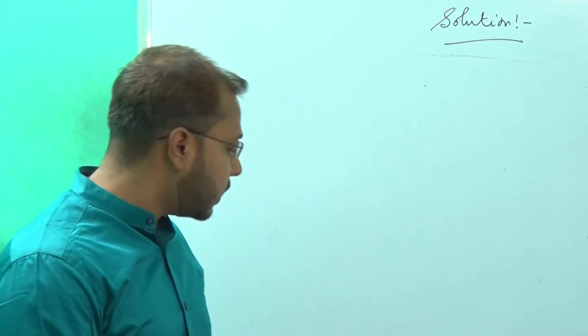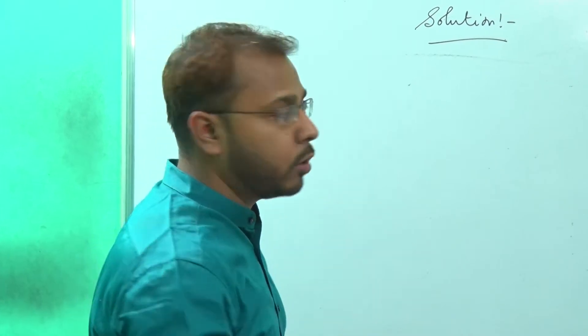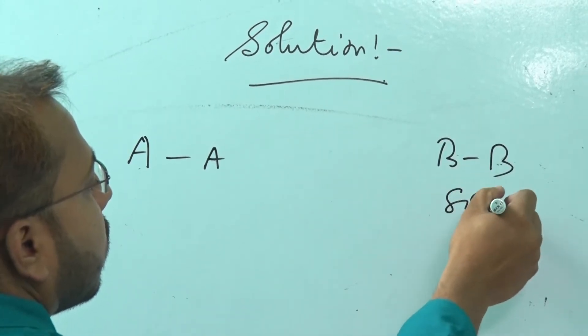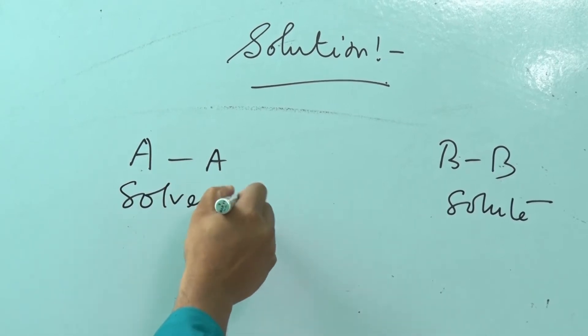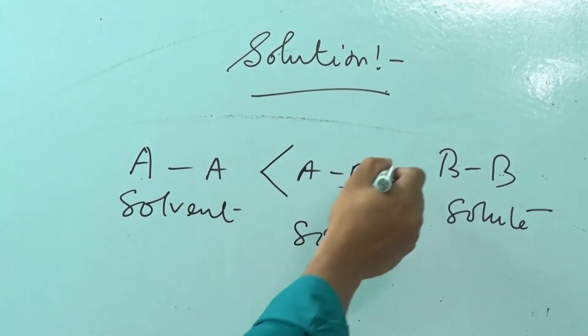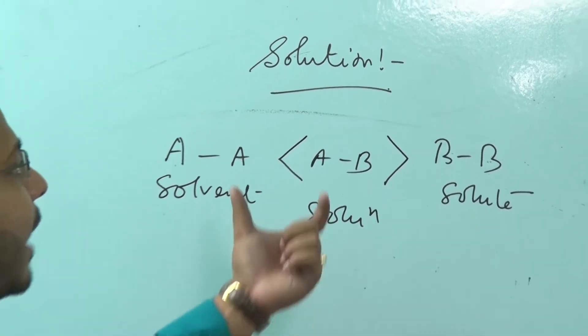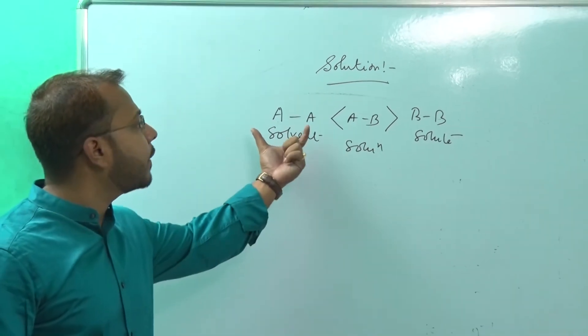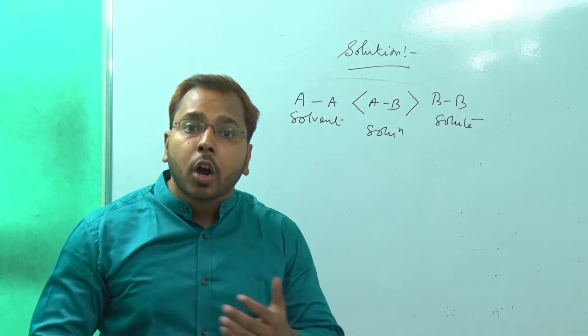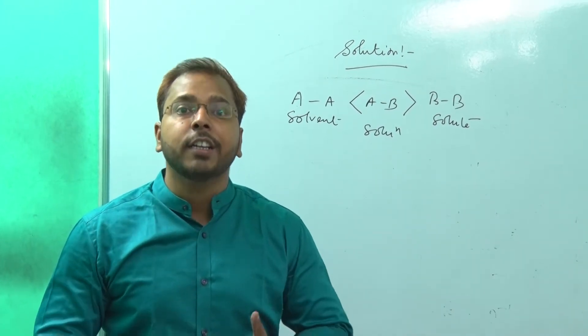Solution means a mixture of solute and solvent. When the solute-solvent interaction is more than the solute-solute and solvent-solvent interaction — that is, when A-B interaction is more than AA and BB — then the non-volatile solute does not have a tendency to get converted into vapour.